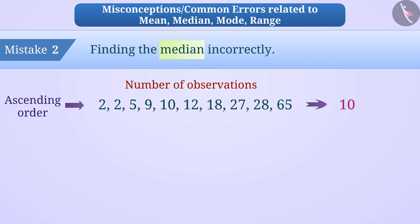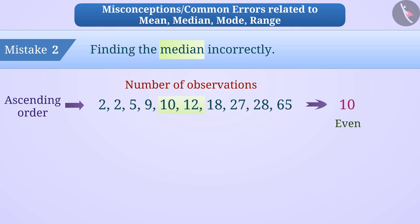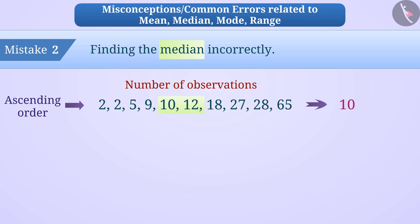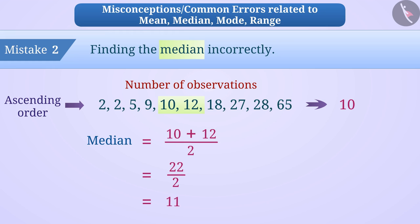Keep in mind that when the number of observations is even, then we get the mean of the two numbers in the middle as the median. As there are two numbers in the middle, 10 and 12, so the median will be 10 plus 12 divided by 2, which is equal to 22 divided by 2, which is equal to 11.